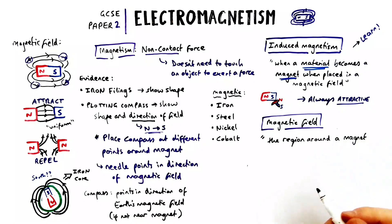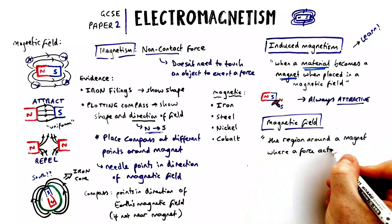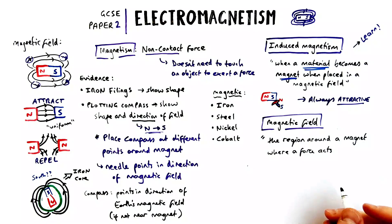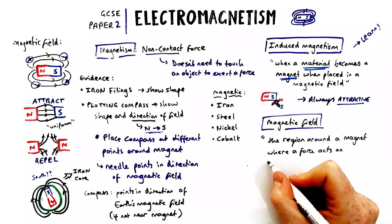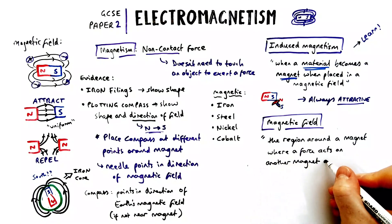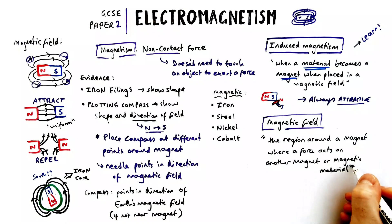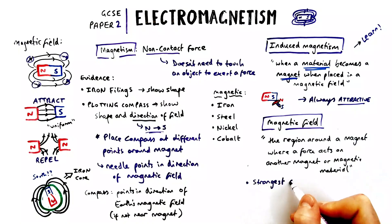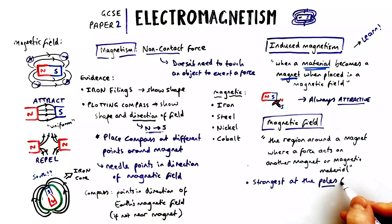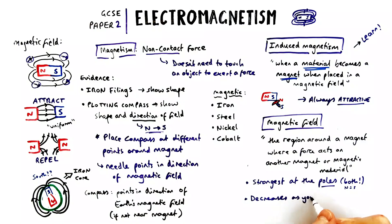To finish off, a couple of bits about magnetic fields. A magnetic field is defined as a region or area around a magnet where a force acts on either another magnet or a magnetic material. The magnetic field is strongest at the poles — both poles are equally strong — and it decreases the further away you get from the magnet.